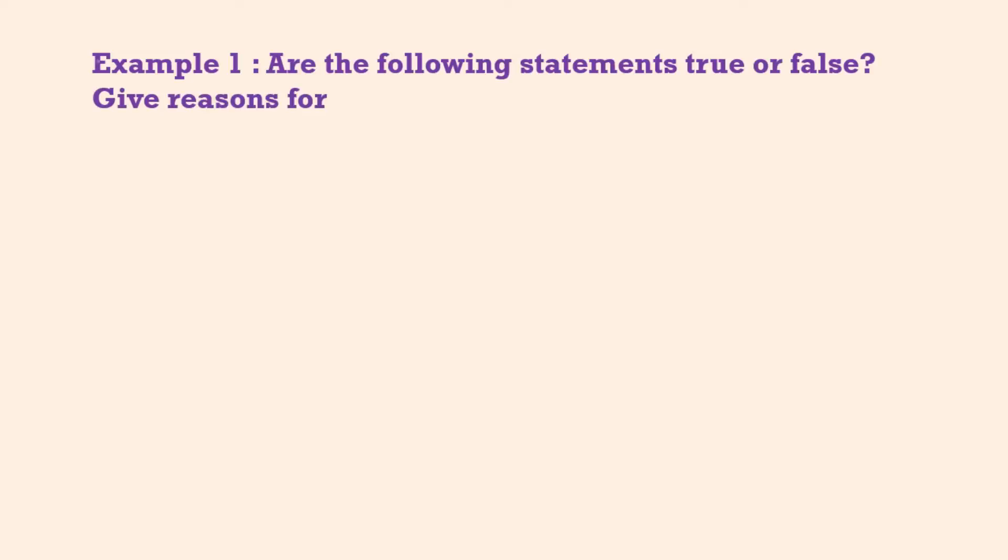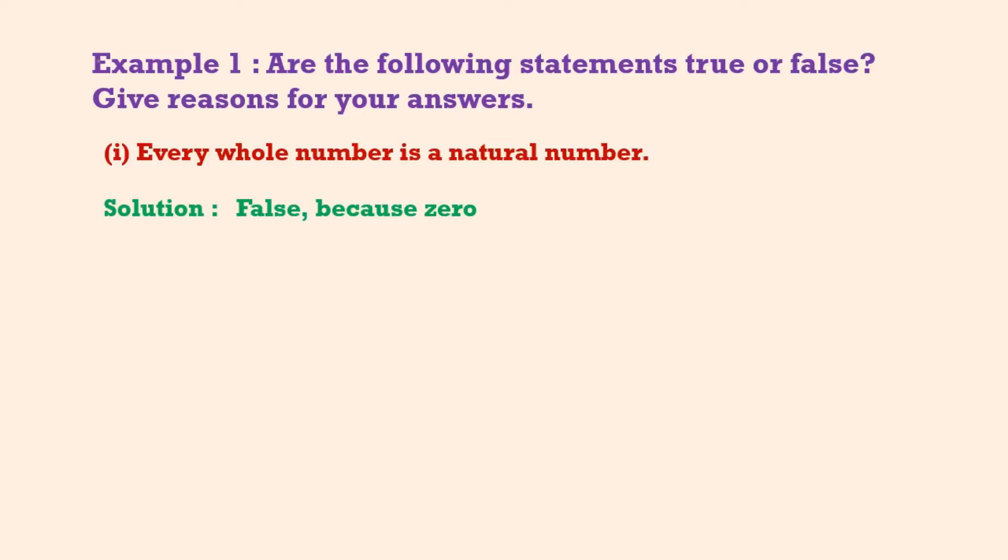Let us take an example. Example 1: Are the following statements true or false? Give reasons for your answers. First one - every whole number is a natural number. Solution: False, because zero is a whole number but not a natural number.